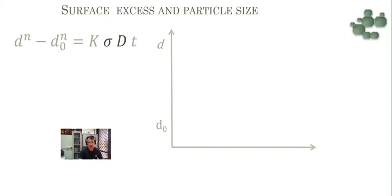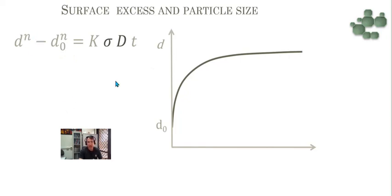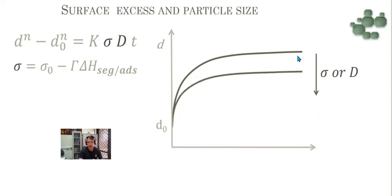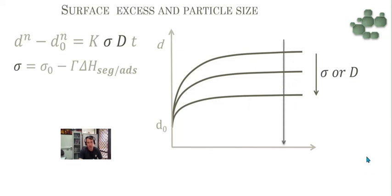One of the main consequences of surface excess is the stabilization of particle size. Looking at the law of particle growth, the particle size growth for time t depends on the surface energy and diffusion, following a curve where n is 2 or 3. When you decrease the surface energy or diffusion, you have a decrease in the final particle size. This is because when you have a surface excess, there is a decrease of surface energy and then stabilization of particle size. As a direct consequence, there is an increase of specific surface area even after long calcination times.